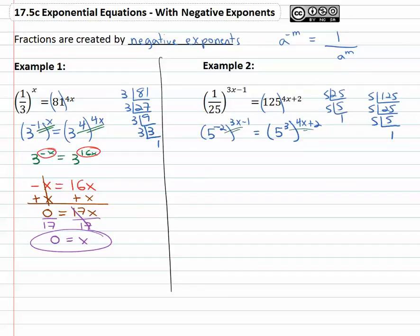We can now multiply exponents together by distributing, making sure we multiply by the entire exponent, giving us five to the negative six x plus two. Negative two times negative one equals five to the twelve x plus six.